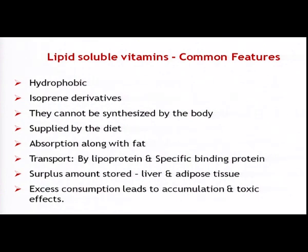The isoprene unit is only the structural side chain attached to the main hydrophobic structure. The third feature is they cannot be synthesized by our body, meaning we are dependent on dietary sources. That is one of the major limiting steps. If a person runs short of this category of vitamins, they would eventually deplete all resources in their body and end up showing deficiency diseases. We need a constant supply from dietary sources.